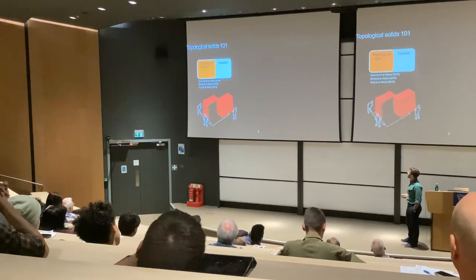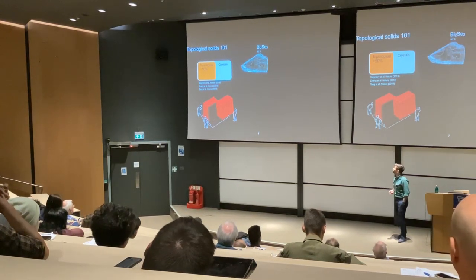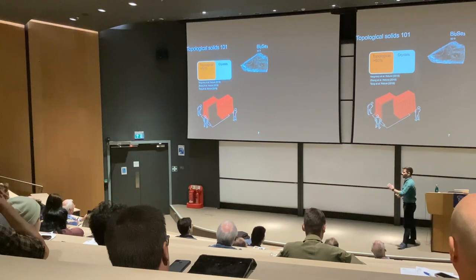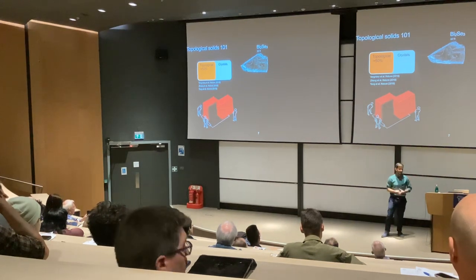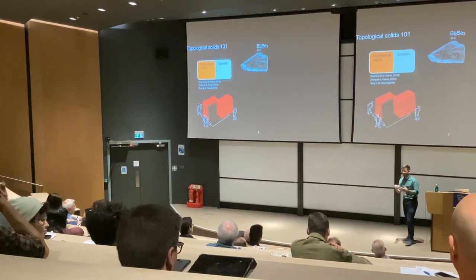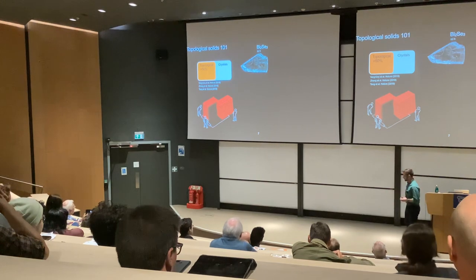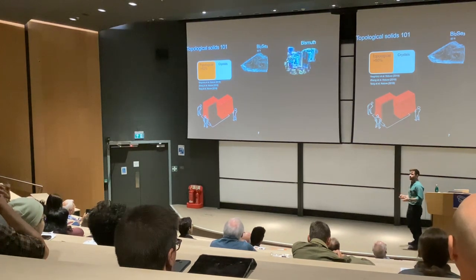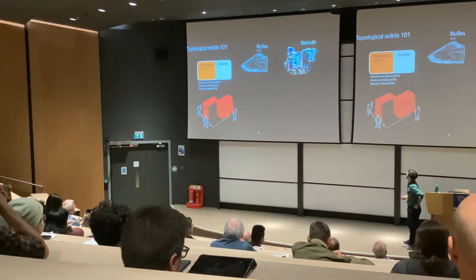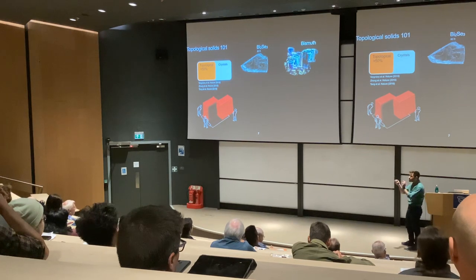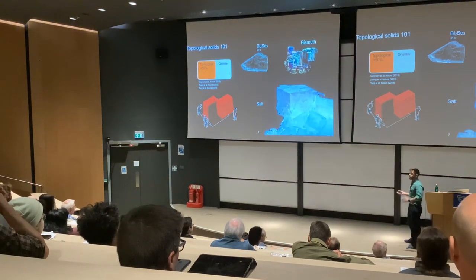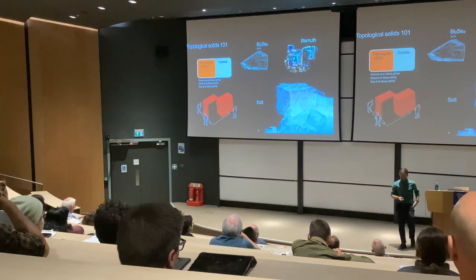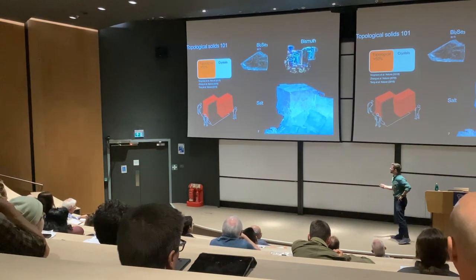This includes materials you may or may not have heard of. Bismuth selenide is a textbook example. If you've ever stored wine in a thermoelectric cooler, those thermoelectrics come from this family of materials — very important. Bismuth itself is a nice example with conducting states around its hinges. Even salt — sodium chloride — is theoretically predicted to trap charges at its corners, a manifestation of the same topological phenomenon.